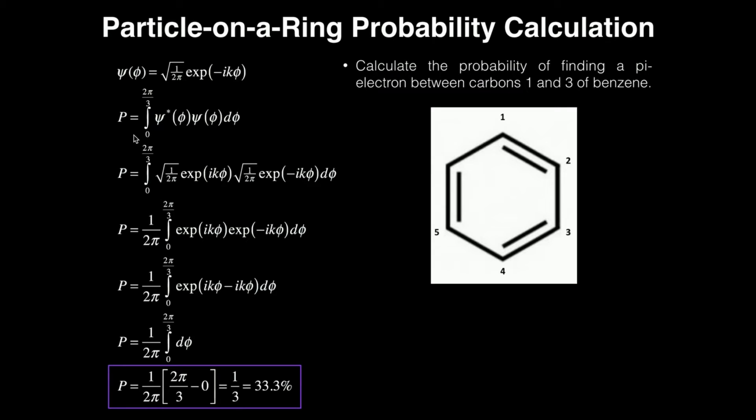So what is my probability? Well, remember I have to take the square of the wave function. So it's the integral from zero to two pi over three, since I'm calculating the probability of finding it between carbons one and three, as we discussed, of psi star of phi times psi of phi d phi. That is my integral. Now I can put in my wave functions.